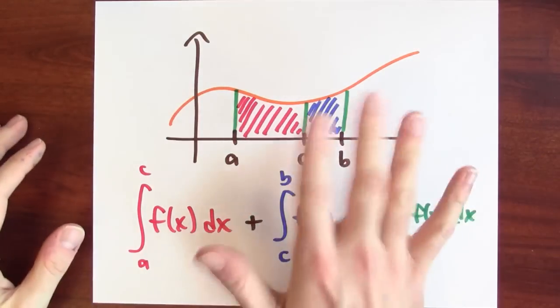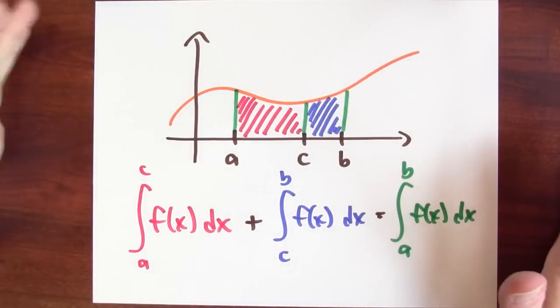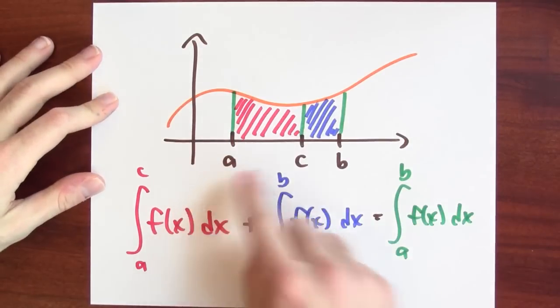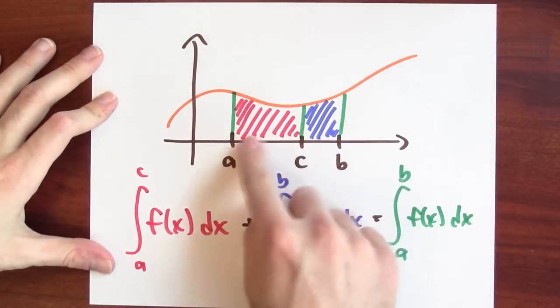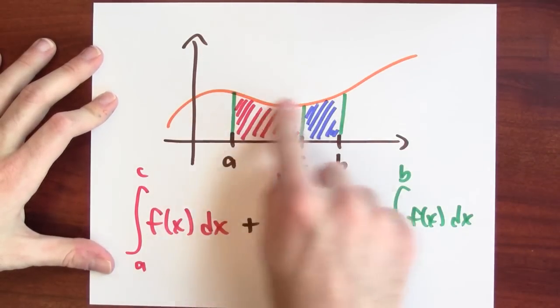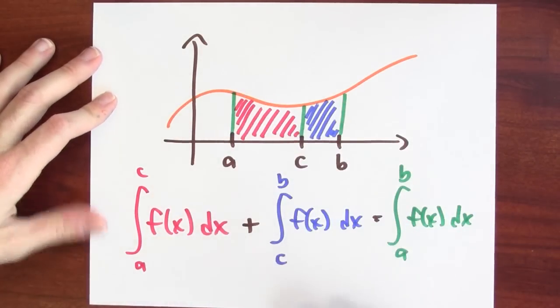There are some properties of the integral that are worth summarizing. For example, here's a property of integration that's often useful. If I want to integrate from A to B, that's what this last integral is, and it's the area under the graph between A and B. It's this whole region here that I've colored in.